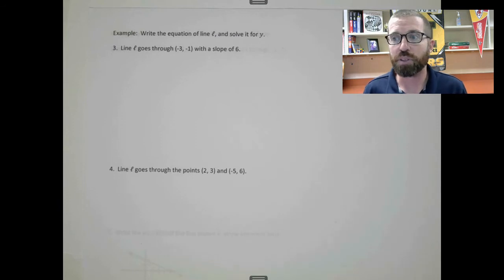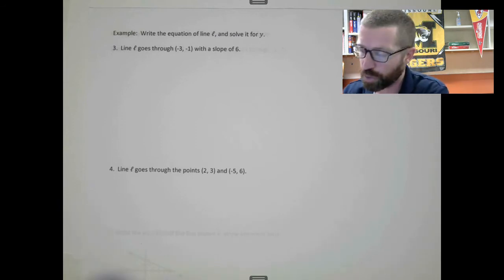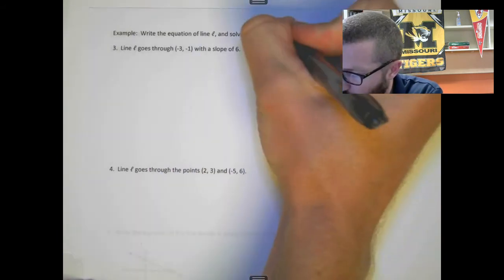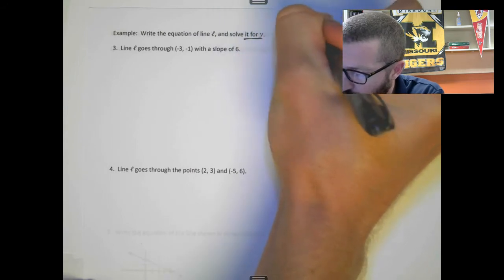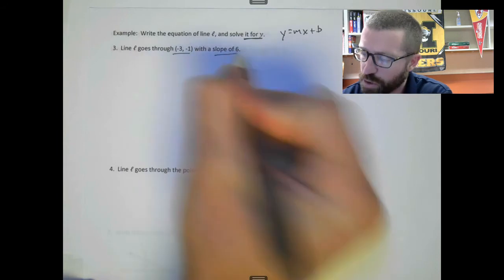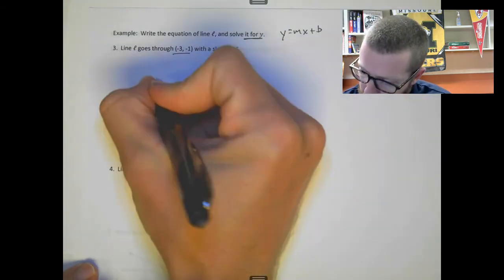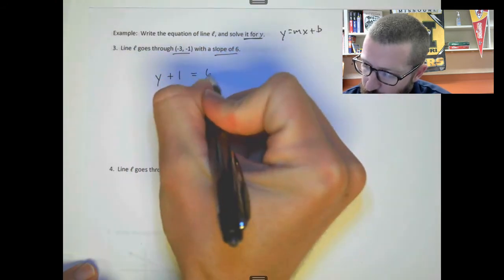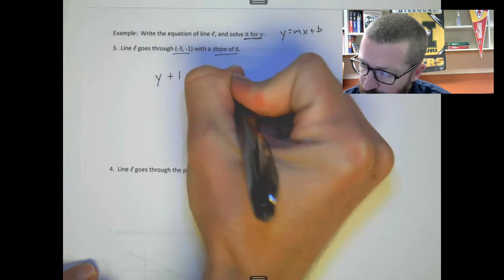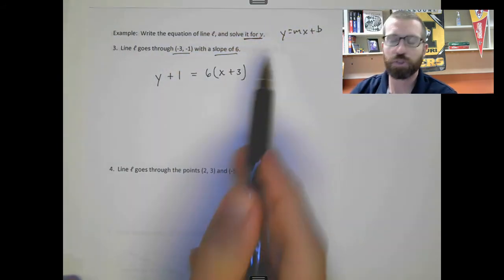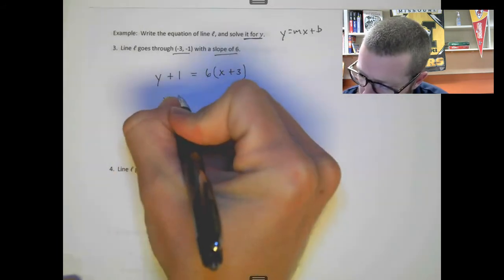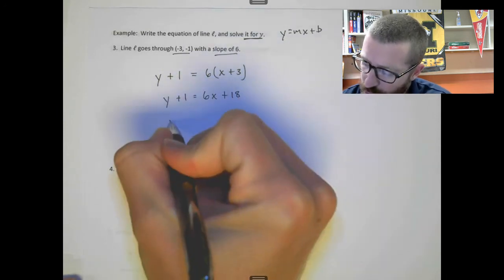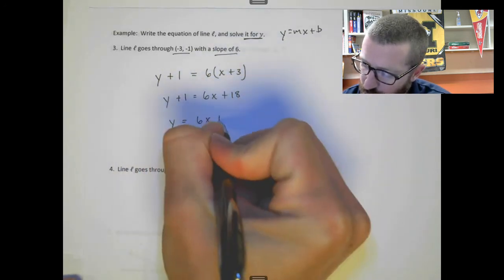I'd encourage you to pause the video and try these on your own, then use the video to check your work. This one says solve for y — so we want y = mx + b form. We have a point and a slope, so let's use point-slope form: y + 1 = 6(x + 3). Distributing gives y + 1 = 6x + 18, so y = 6x + 17.